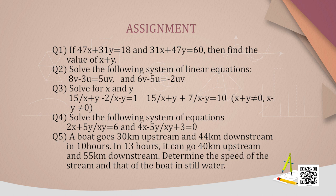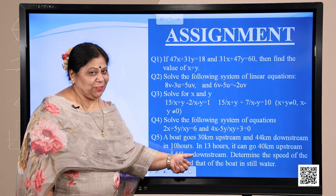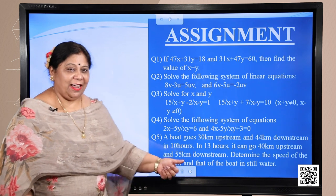Question 4: Solve the system — 2x plus 5y upon xy equals 6, and 4x minus 5y upon xy plus 3 equals 0. Question 5: A boat goes 30 kilometers upstream and 44 kilometers downstream in 10 hours. In 13 hours it can go 40 kilometers upstream and 55 kilometers downstream. Determine the speed of the stream and speed of the boat in still water. Please try to solve these questions. Wish you good luck. Thank you.